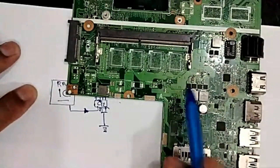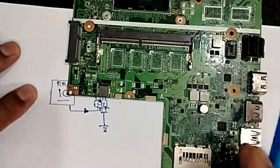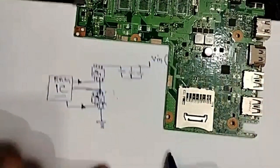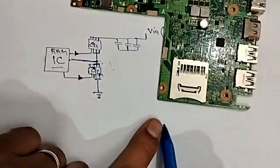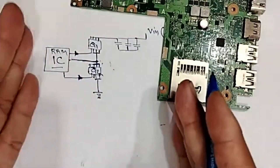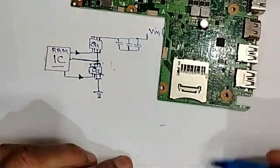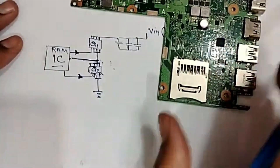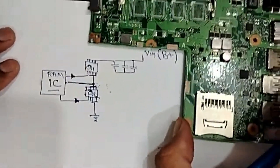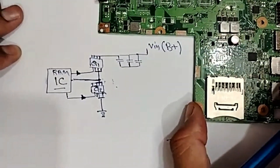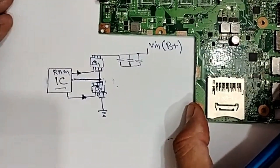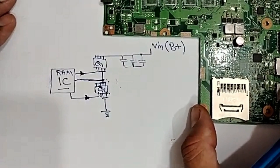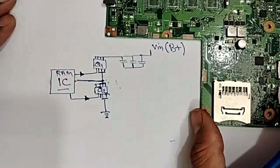This circuit, for example — we have two inductors here, means we have an IC here, one channel on each side, two MOSFETs for each. Easy, very easy. Just stay tuned and you're going to understand everything in this channel: electronic repair basics.